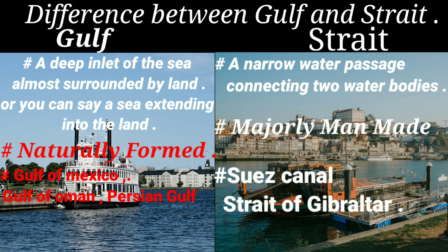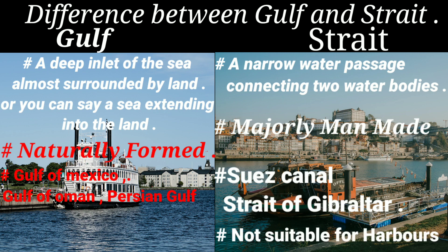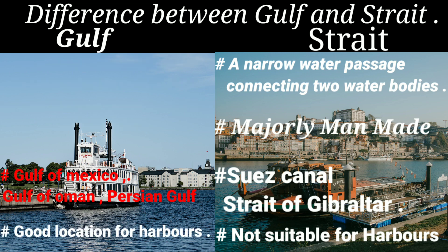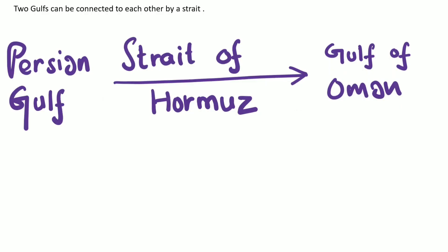Straits are not suitable for harbors whereas gulfs are good locations for harbors. Two gulfs can be connected with each other by a strait. For example, the Persian Gulf and Gulf of Oman are connected to each other by the Strait of Hormuz.